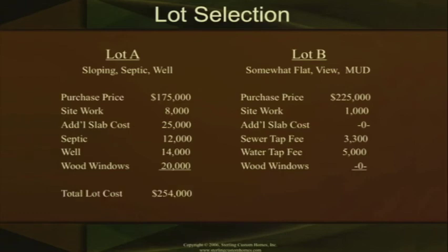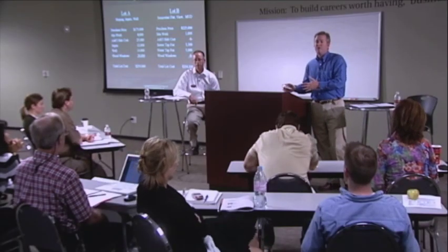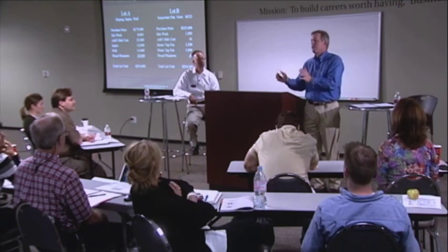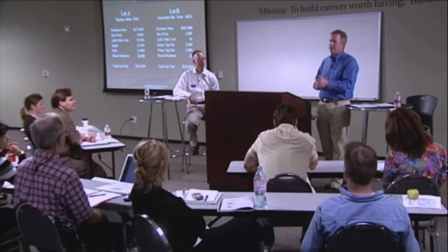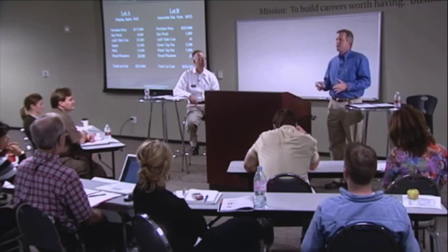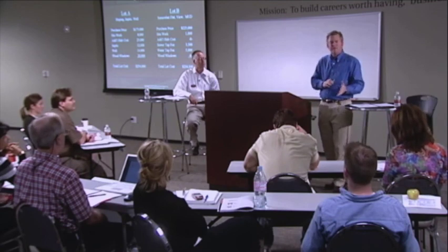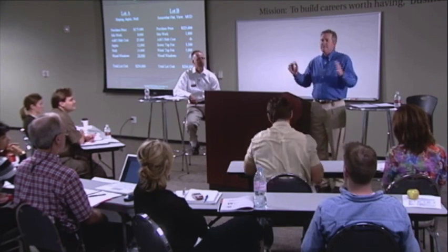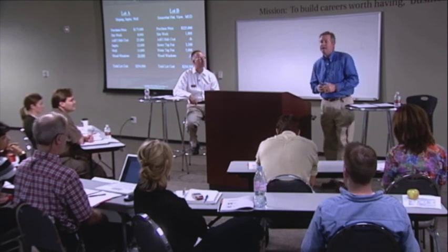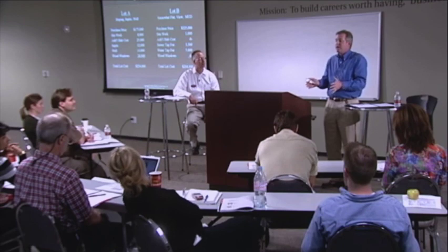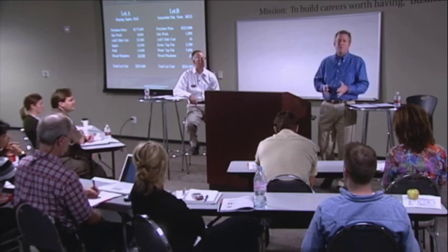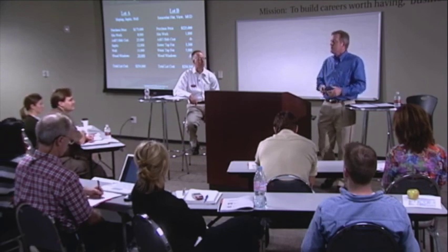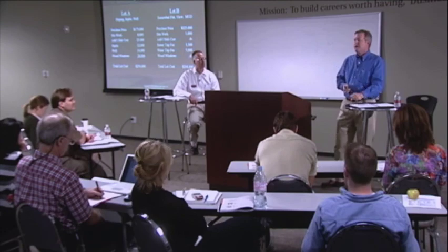Let's add these numbers up. Lot A comes to $254,000. Lot B comes in at $234,300. So at the end of the day, what's really cheaper? Lot B, which they liked to start with and appeared to be $50,000 more than lot A, actually turned out to be $20,000 cheaper at the end of the day. The purpose of getting your builder involved upfront is to help you through these numbers. A builder can put these numbers into a spreadsheet, add it all up, and figure out which lot is truly cheaper for that client. Then they can make those intangible decisions — is this in the area I want, is it really cheaper? Going through this is a great exercise in the lot selection process. Thank you.